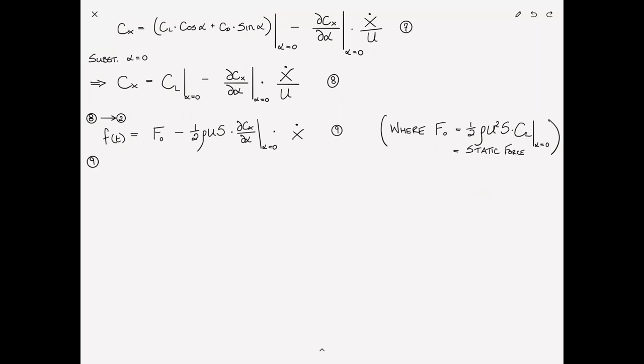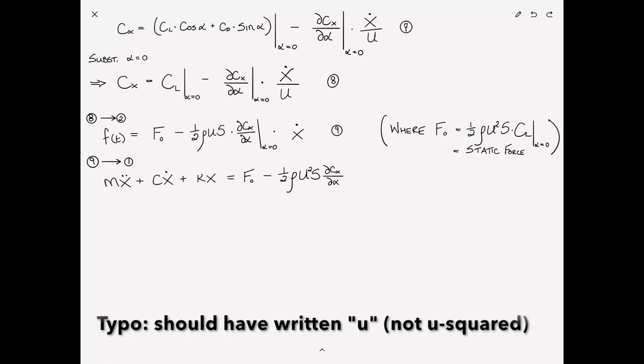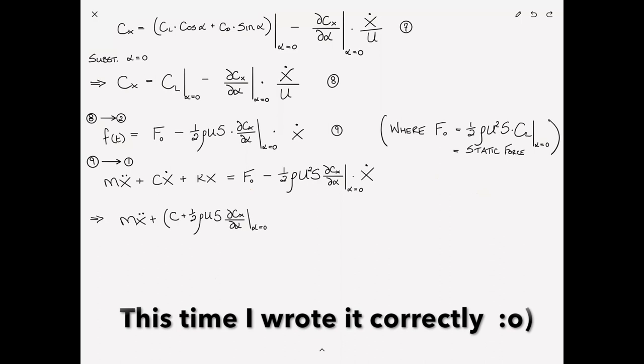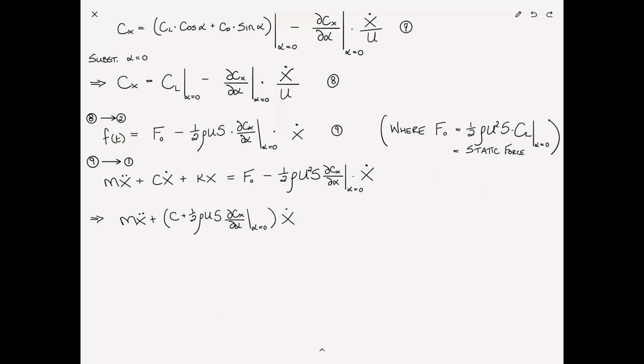Now, we can substitute equation 9 into equation 1, our original equation of motion, and we end up with mx double dot plus cx dot plus kx is equal to f0 minus 1/2 ρu²S dCx/dα at α equals 0 times x dot. We can rewrite this by taking this term to the other side and grouping the x dot coefficients. This becomes mx double dot plus, and now we can group the coefficients on the x dot term as c plus 1/2 ρuS dCx/dα at α equals 0, all of this times x dot plus kx equals f0. And I just want to make the point that this is now an effective damping coefficient. So, what's interesting is it would appear that the damping of the system is being affected by the aerodynamic load. Call this equation 10.